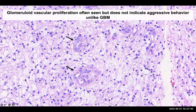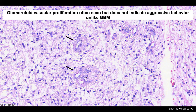Another feature which is not diagnostic but is of importance is the glomeruloid vascular proliferations. The importance of this is that these do not indicate aggressive behavior, unlike a glioblastoma multiforme where the presence of such microvascular proliferations indicates aggressive behavior. But in the case of pilocytic astrocytoma, if you note these, it does not indicate aggressive behavior.